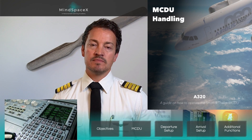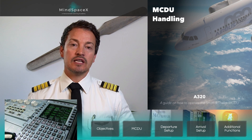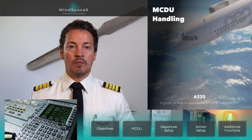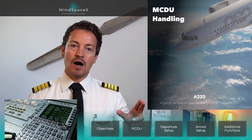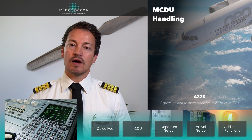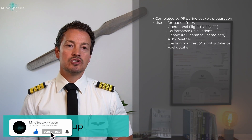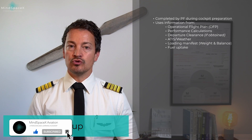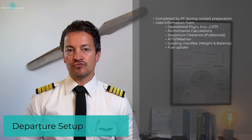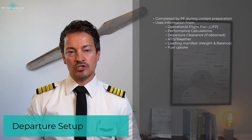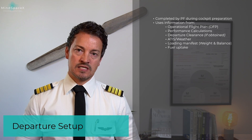That was the layout of the MCDU. How we operate it is taught through a normal setup. So let's use the Airbus setup and see how we set up the aircraft for departure. The departure setup is done by the pilot flying during the cockpit preparation. The pilot flying is ready to set up the MCDU when all the necessary information is available.